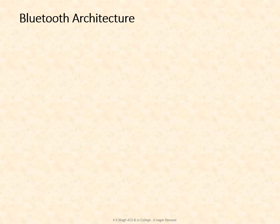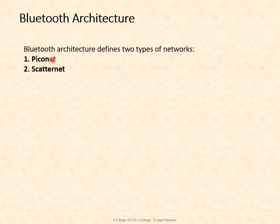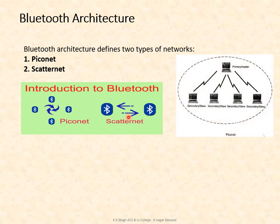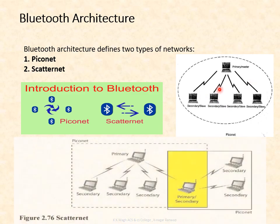The Bluetooth architecture defines two types of networks: PicoNet and ScatterNet. The PicoNet consists of one primary or master station and secondary or slave stations. Communication occurs only via the primary station — if one secondary station has to send data to another secondary station, that data goes through the primary station only. The ScatterNet is formed using two or more PicoNets, in which one secondary station acts as a primary station in another PicoNet.